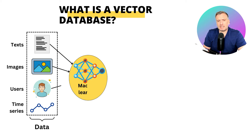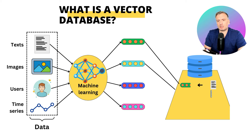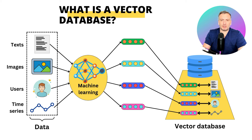We have many techniques in machine learning to encode data into a vector representation. Once you have this vector representation, you can store the data into a vector database and index the data through the vector representation.